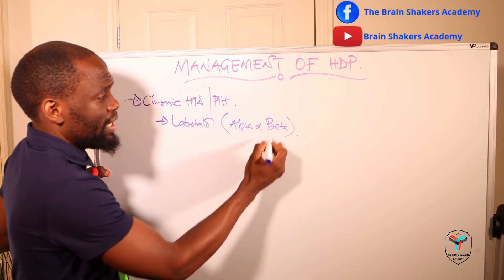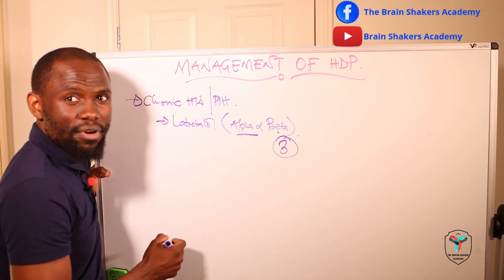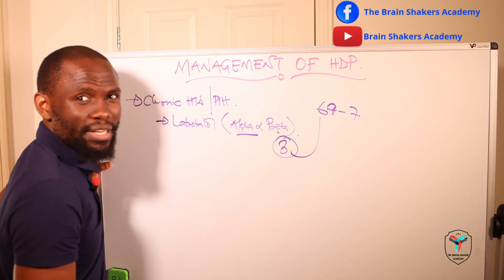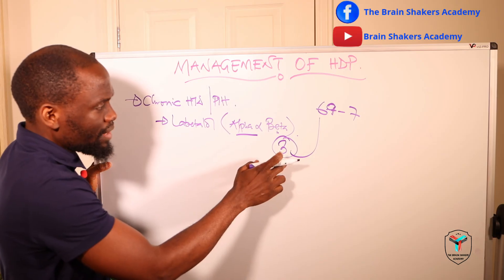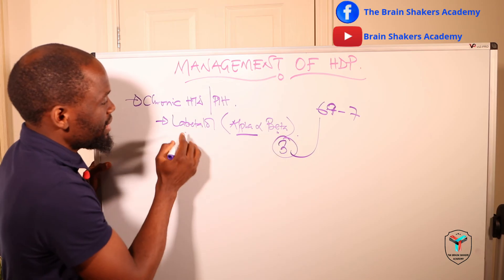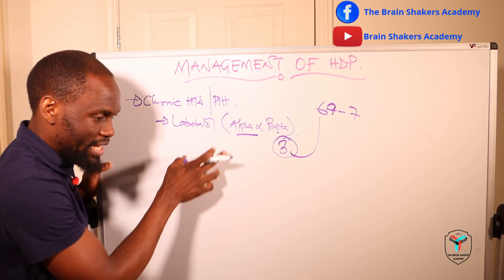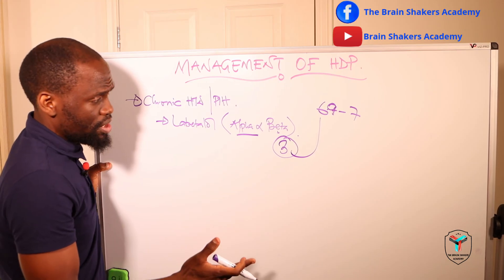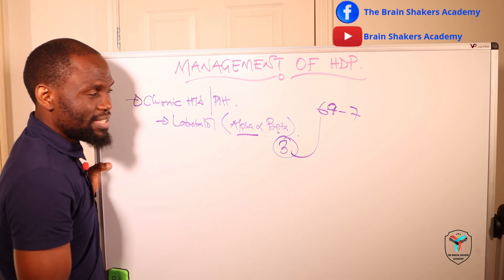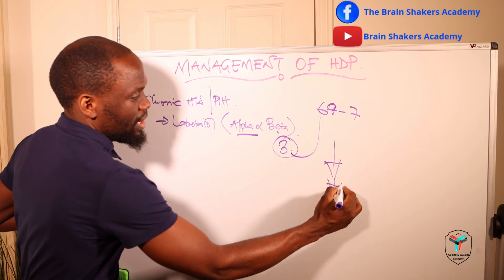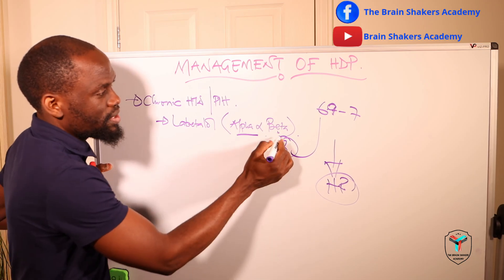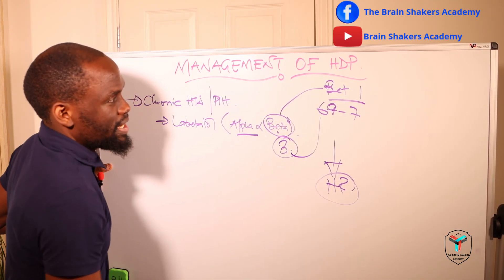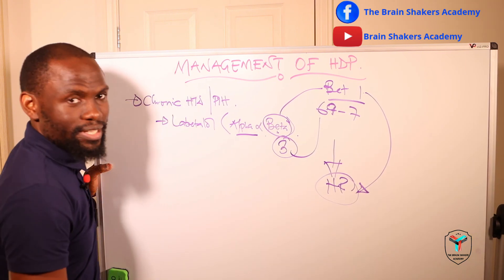If you administer labetalol orally, it is three times more a beta blocker than an alpha blocker. If administered intravenously, this raises to about 6.9 to 7 in terms of potency. This is your first-line medication for chronic hypertension and pregnancy-induced hypertension. A common side effect is that it will depress or reduce the heart rate, because as a beta blocker it works on the beta-1 adrenergic receptors, causing a reduction in heart rate.